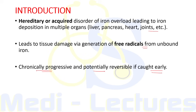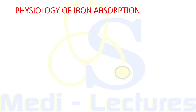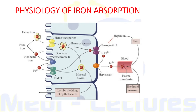Before going to pathophysiology, we need to understand the physiology of iron absorption in the duodenum. There is a separate transporter for heme iron from animal-origin food. Non-heme iron from plant origin is present in Fe³⁺ form and is converted to Fe²⁺ through a duodenal brush border enzyme known as duodenal cytochrome B reductase. This Fe²⁺ is then transported inside the enterocyte via divalent metal transporter 1 (DMT1). Iron is then stored in the mucosal cell as ferritin — the storage form of iron.